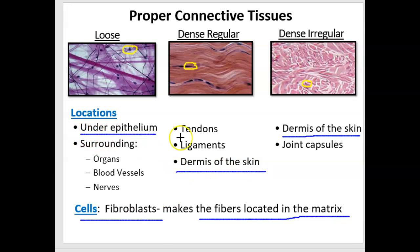In the case of loose connective tissue, you'll find it adhering organs together. Inside the body, you have multiple organs, and it's important that those organs stay in position. Loose connective tissue surrounds the organs and the blood vessels and the nerves, kind of keeping everything together, allowing movement but not allowing too much movement.